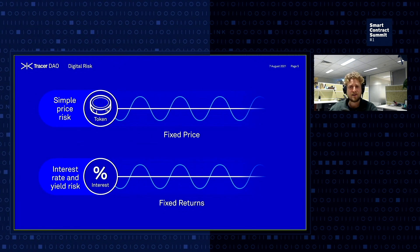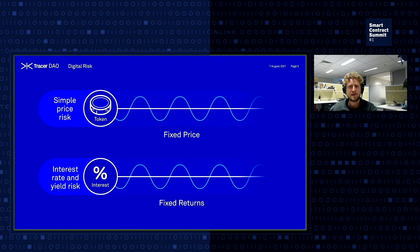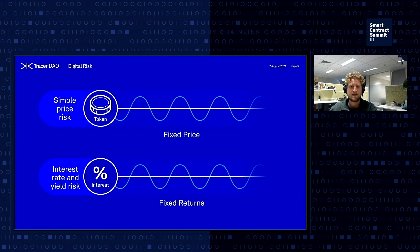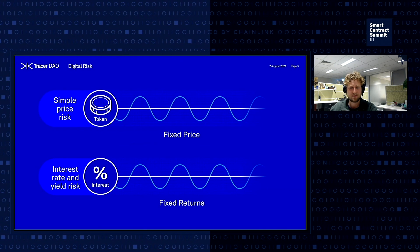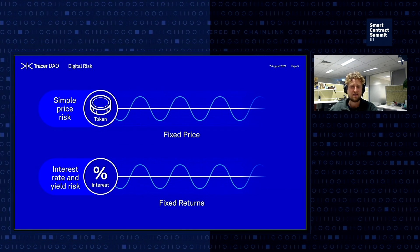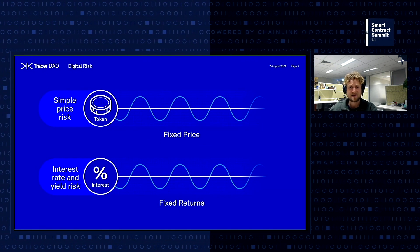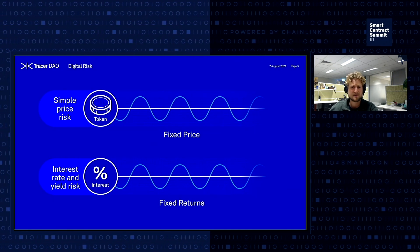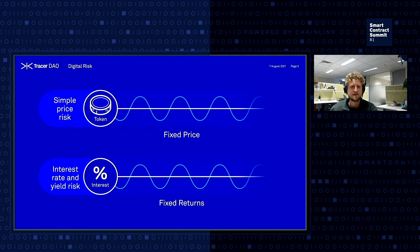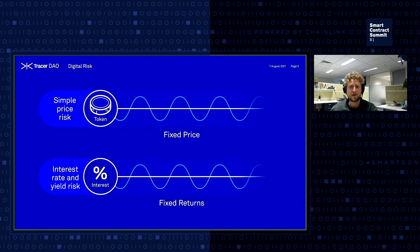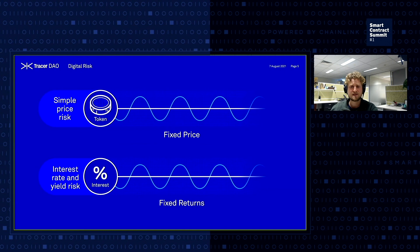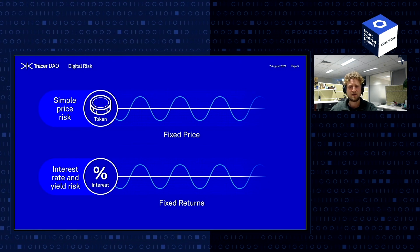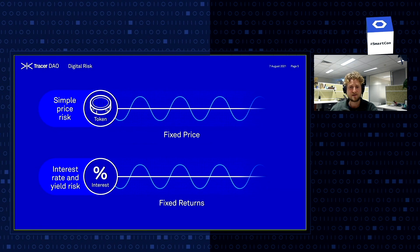In the decentralized finance economy right now, there are a variety of token risks that require management. Take a prospective Chainlink staker who has purchased a LINK token to secure the Chainlink network and wishes to stake it for six months. Since many tokens are very volatile, by using Tracer derivatives for risk management, the staker can lock in their price of LINK and guarantee a fixed price over a six-month period. Similarly, there are tens of billions of dollars locked up in DeFi lending, borrowing, and yield-generating protocols that simply don't offer fixed-rate products. By buying a Tracer derivative position, you'll be able to fix your returns and lock in yield-generating events within DeFi.